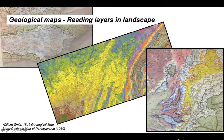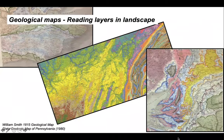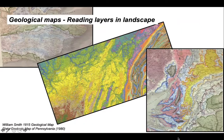Smith realised that by putting rocks on a map, he could deduce the order in which they were deposited and how they continued into the subsurface. These reasons remain important today, not only for continuing to develop understanding of our planet, but other planets too.